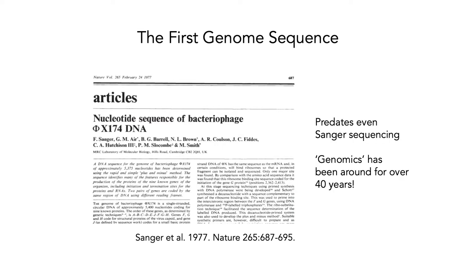You might think that genomics is a relatively new thing, and in one sense it is. But the first genome sequence was actually developed in 1977, done by our old friend Fred Sanger. In fact, the sequence predates even Sanger sequencing — it used a different technology to get the DNA sequence. This just goes to show that genomics has been around for a very, very long time, over 40 years ago.